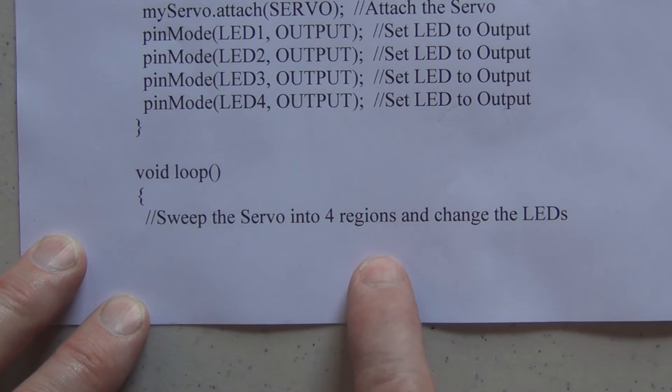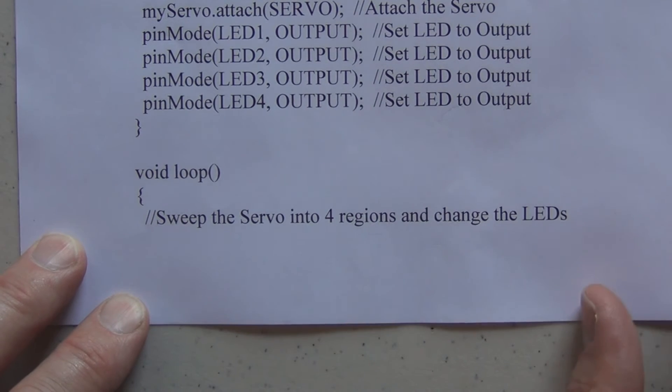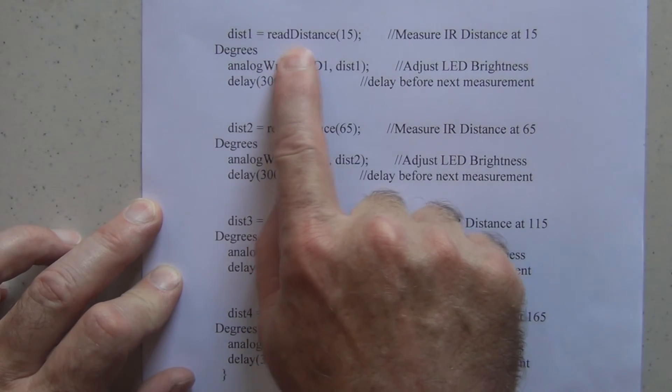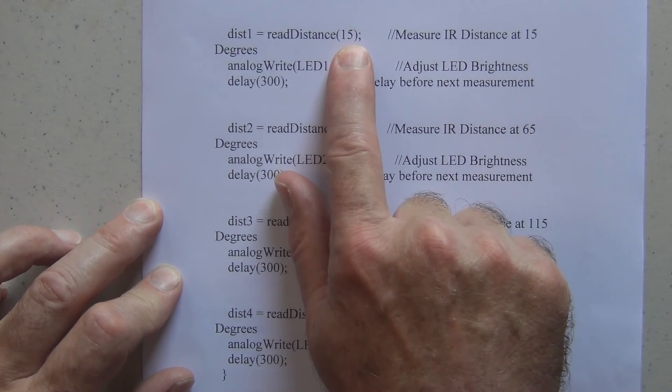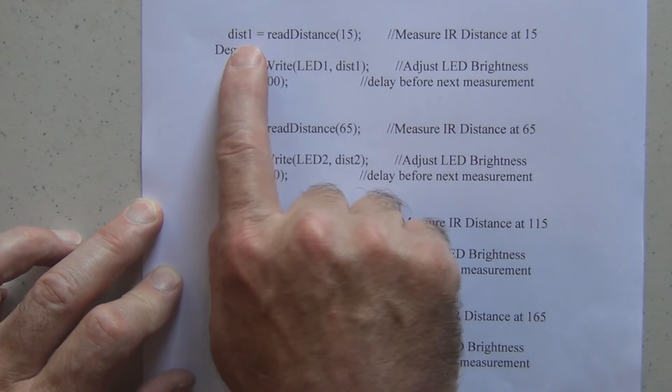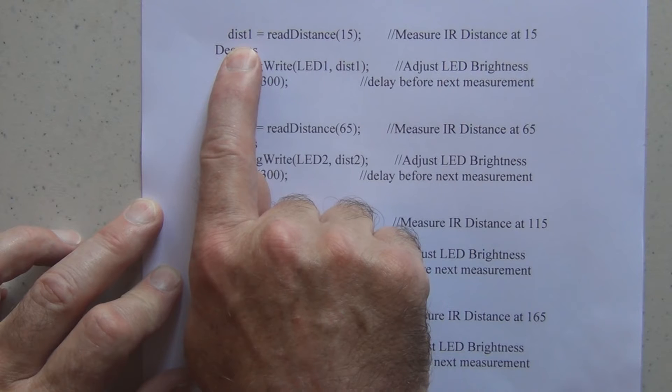And then we are setting up our loop that is going to sweep the servo to those 4 regions, those 4 quadrants. So here we are reading distance at 15 degrees and storing that information as distance 1.